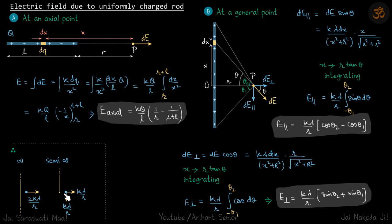Now for a semi-infinite wire at the edge, at a point P which is at a distance perpendicular to the edge of that infinite wire. So here you will see that theta 1 is 0 and theta 2 is pi by 2. So you put those values here, you will get E parallel will come to be same as E perpendicular. That will be k lambda by r.